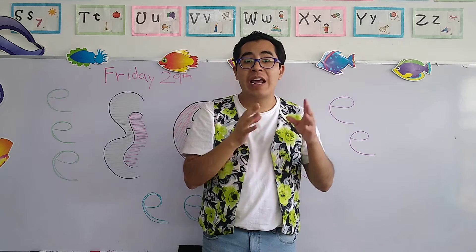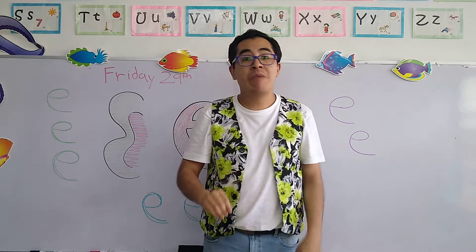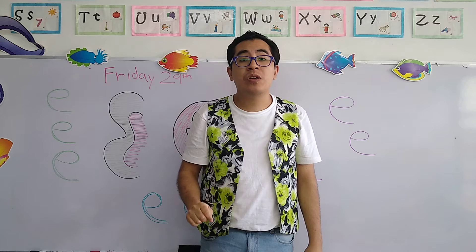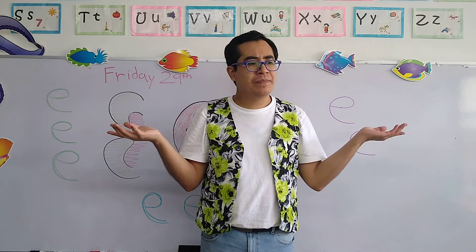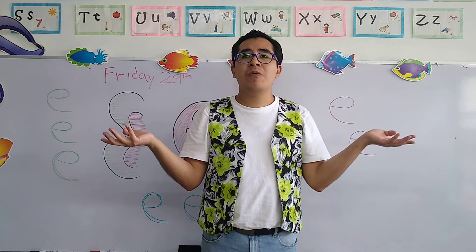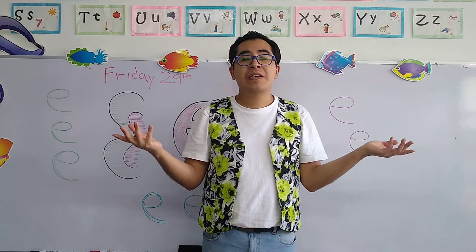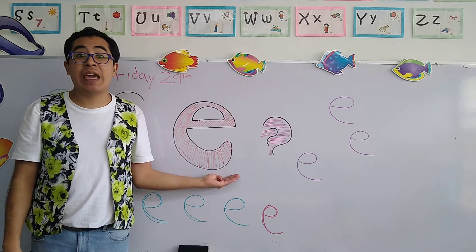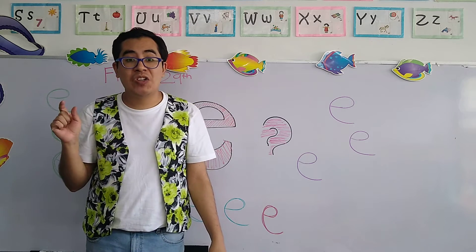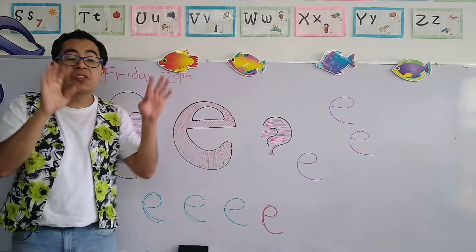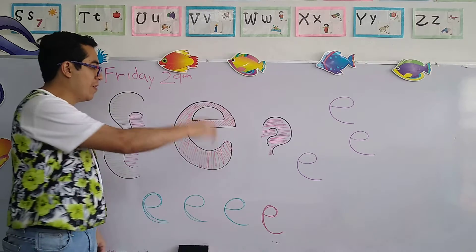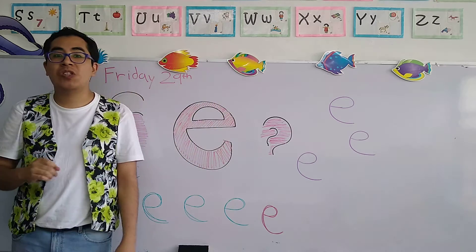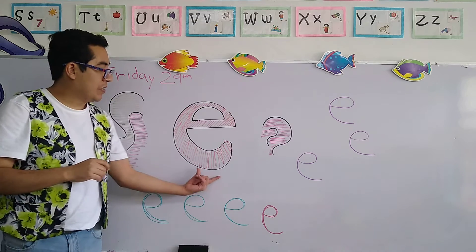Today we're going to continue with the same letter, letter E, but in small form. Remember, all of the letters have two forms — capital, mayúsculas; small, minúsculas. Today we're going to continue with letter E in small form. How do we know letter E in small form? How is the shape of a small E? The shape and form is like a snail. Snails in Spanish are called caracol, and this looks similar to a snail. We start from this form and make like a circle — like a circle that isn't finished. Como un círculo sin terminar — just like a snail. This is small E.